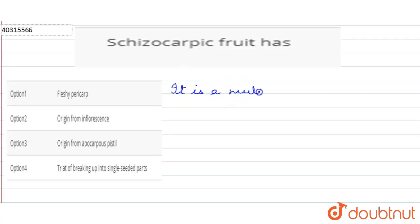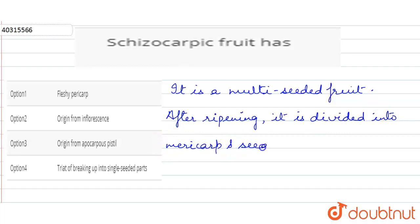It is a multi-seeded fruit. After ripening, it is divided into mericarp, and seeds come out after the destruction of pericarp.